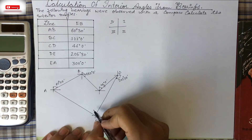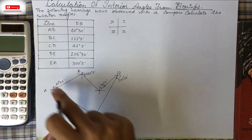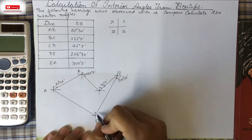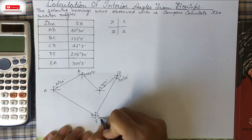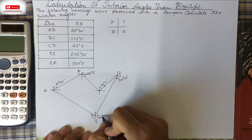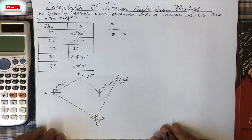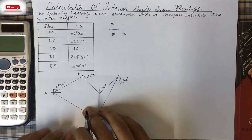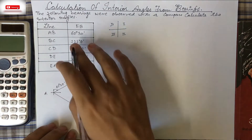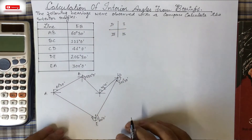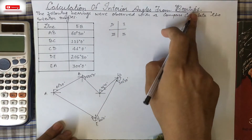Finally, from E to A the bearing is 300°0', which is in the fourth quadrant. We join E directly back to A to close the traverse. This completes our figure for the question.